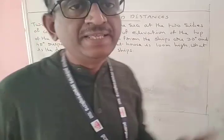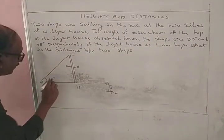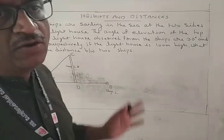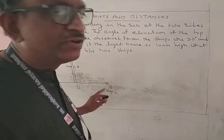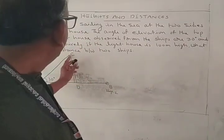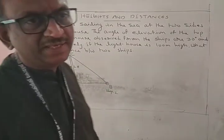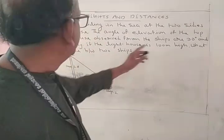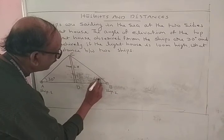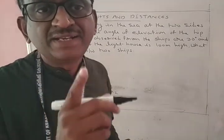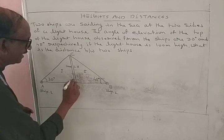Here AC is the line of vision, and 30 degrees is the angle of elevation. Next, a person on ship 2 observes the top of the lighthouse. Therefore, the line of vision is BC and the angle of elevation in this case is 45 degrees. Here there are two right triangles — the first right triangle and the second right triangle.